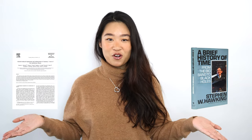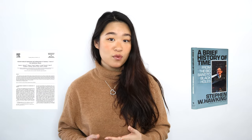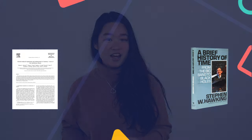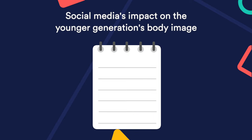Now that you have the literature ready, before you start organizing your literature review structure and argument, you need to draw connections and relationships between the sources you've read. Let's recap our topic: social media's impact on the younger generation's body image.